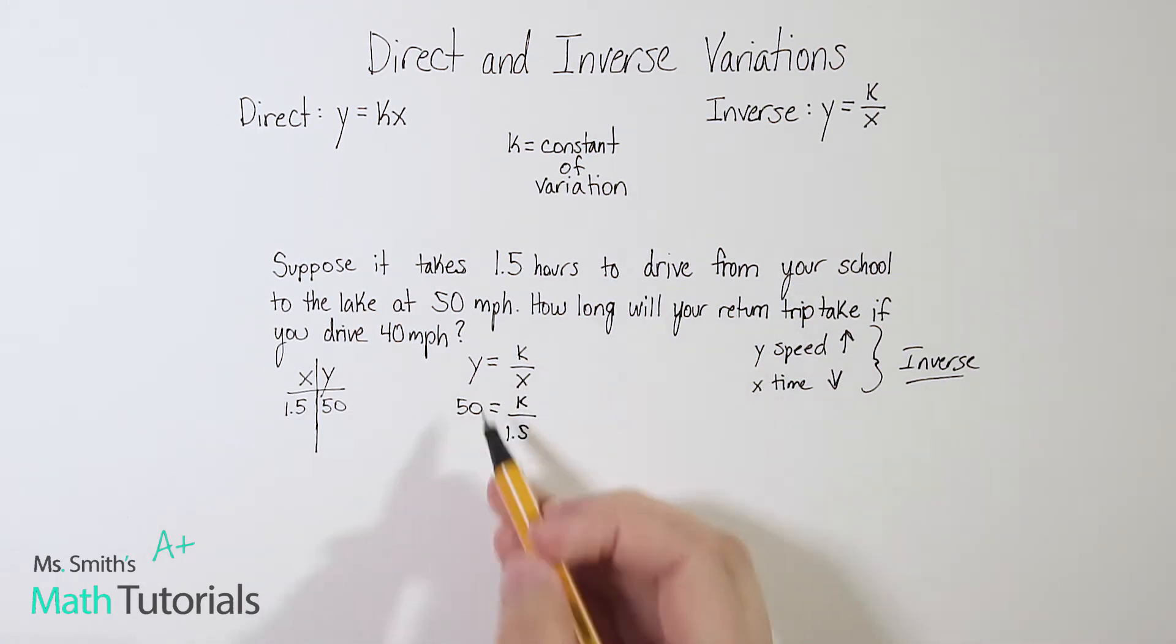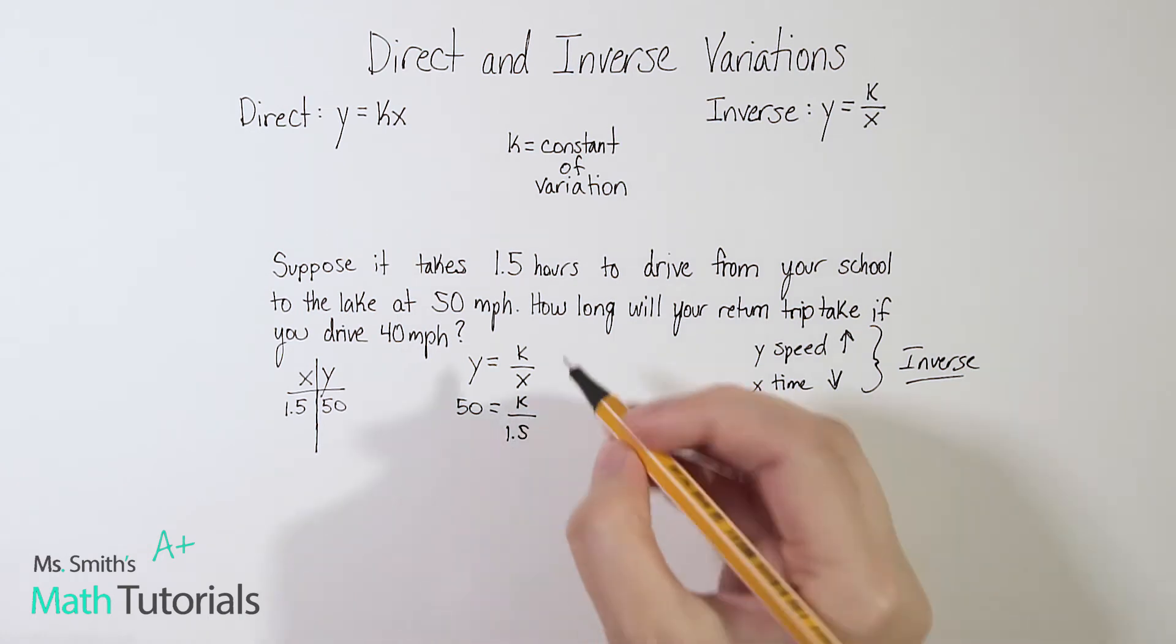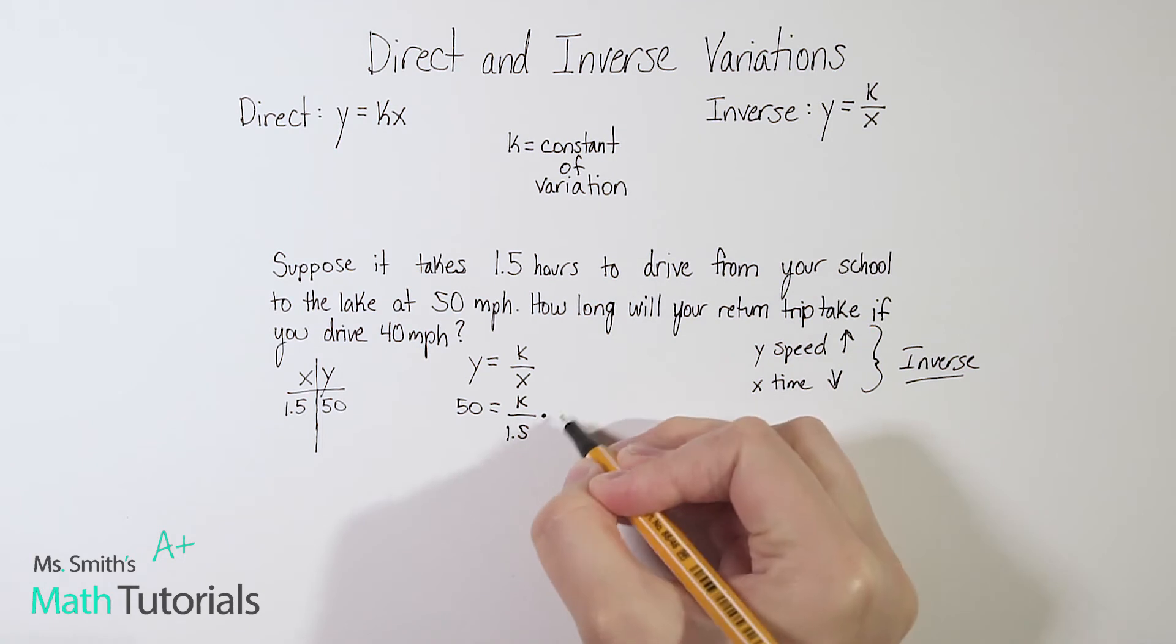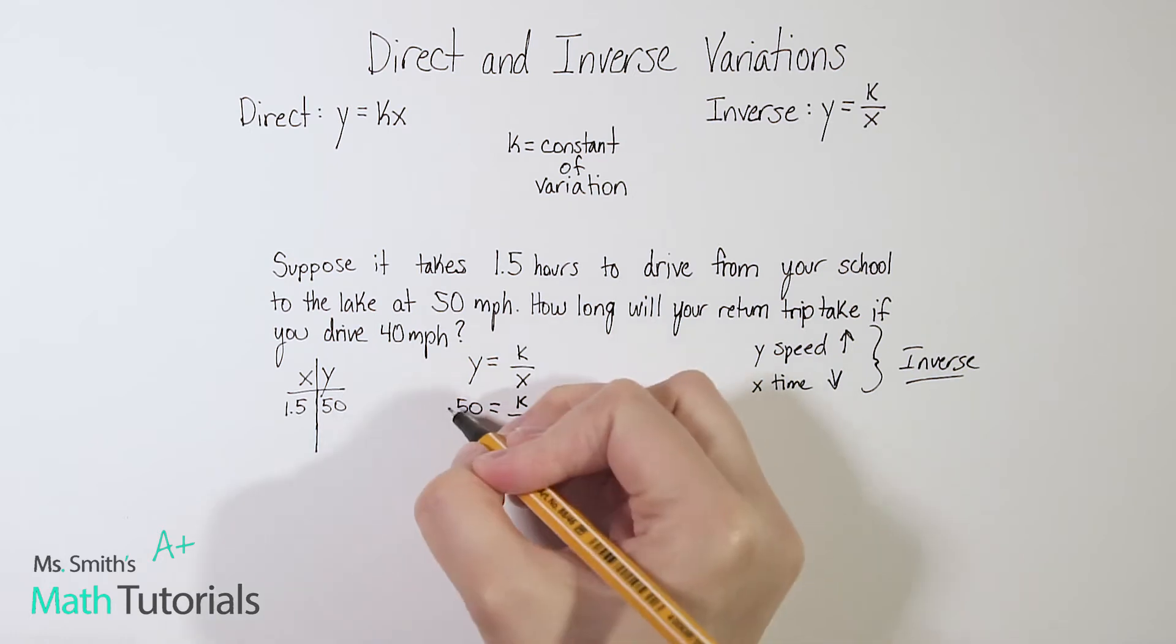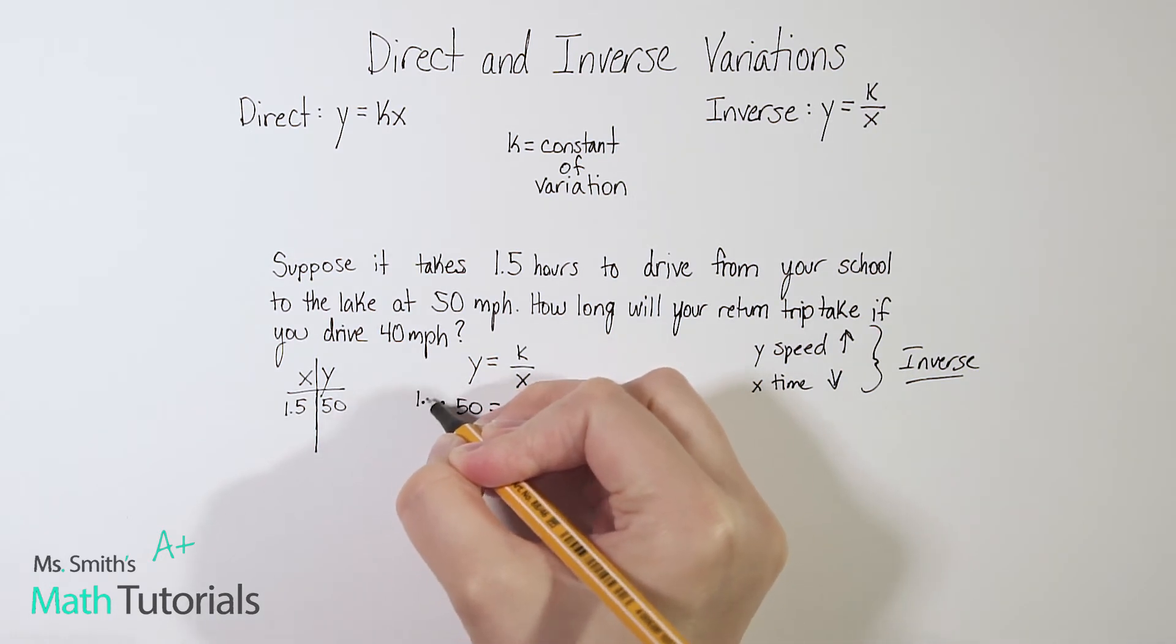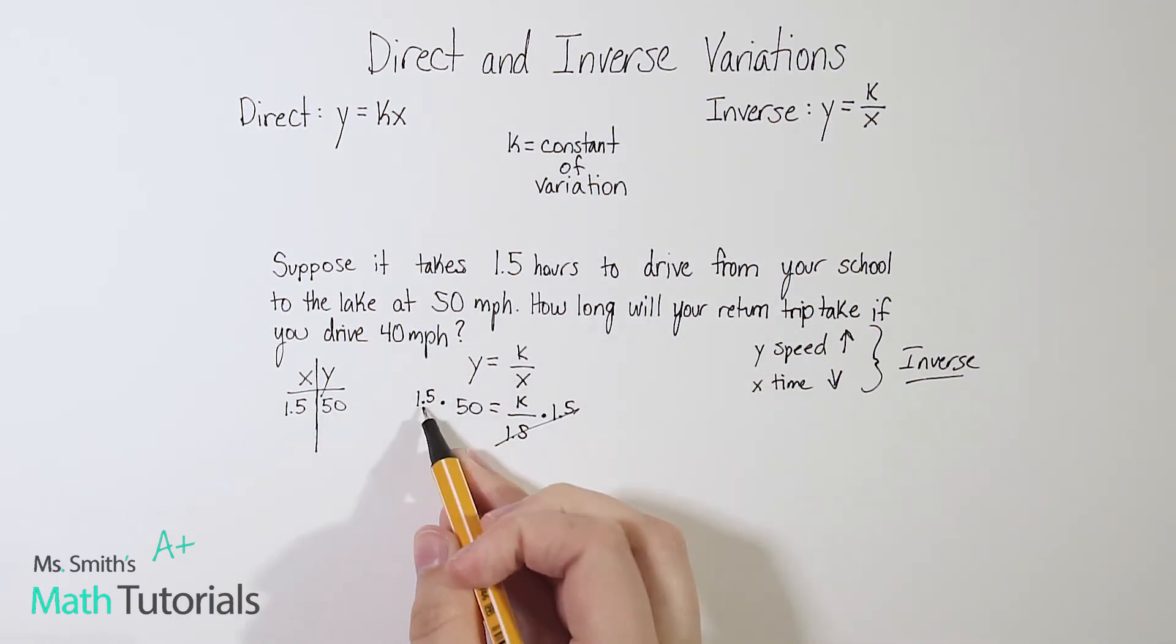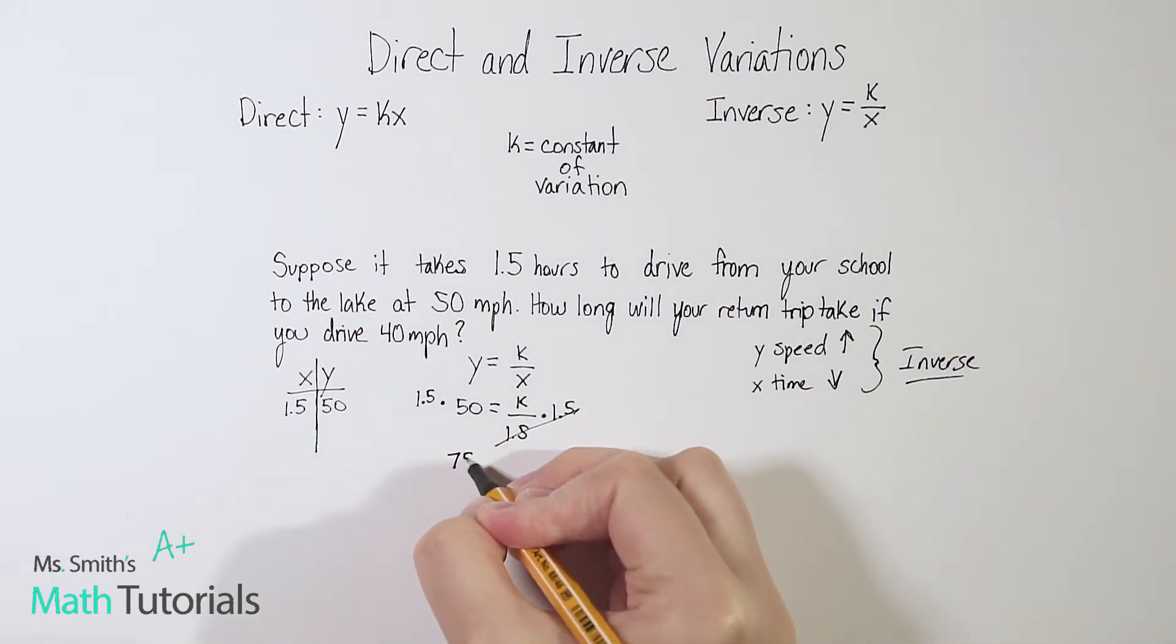So y is 50, k divided by x is 1.5. All right, now to solve this, I'm going to have to go back to some of my algebra rules. Anytime I want to get rid of a fraction, I can multiply by the denominator. So in this case, 1.5, and it cancels. So 50 times 1.5, that's going to give me 75 equals k. Okay, I always star that, because that's going to be very important information as I move forward in this problem.